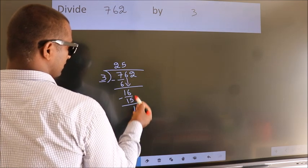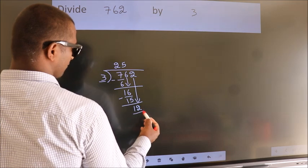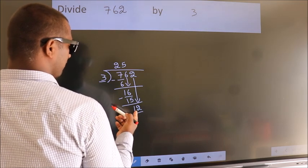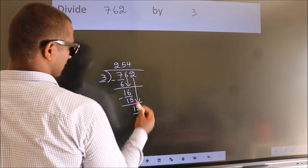After this, bring down the beside number. So, 2 down, making 12. When do we get 12 in 3 table? 3 4s, 12.